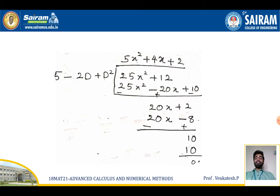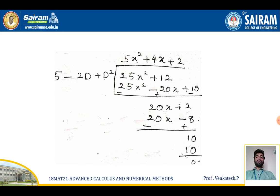Multiplying (5 - 2D + D²) by 5x² gives 25x² - 20x + 10. Subtracting from 25x² + 12 leaves 20x + 2. Dividing 20x by 5 gives 4x. Multiplying the D-expression by 4x gives 20x - 8, leaving remainder 10. Dividing 10 by 5 gives 2, and multiplying the D-expression by 2 gives 10, leaving 0. The process stops.